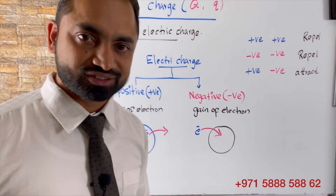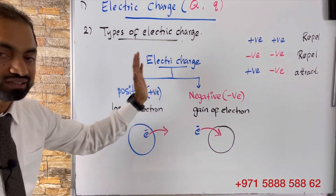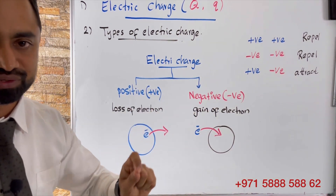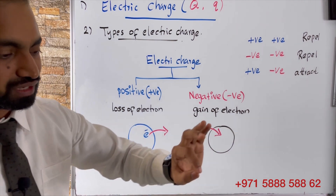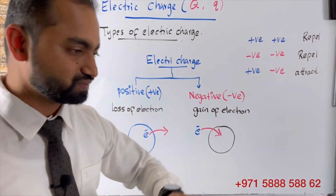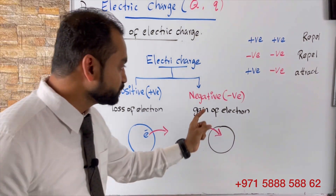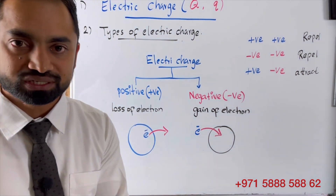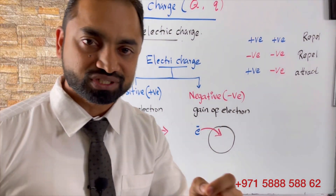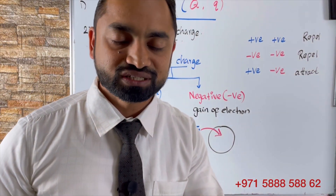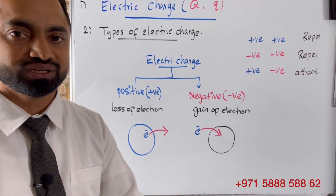The next topic is types of electric charges. There are two types of electric charge: positive charge and negative charge. An object gets a positive charge when an electron is moved out of the object — when the object loses an electron, it gets positive charge. An object gets a negative charge when the object receives or gains an electron.